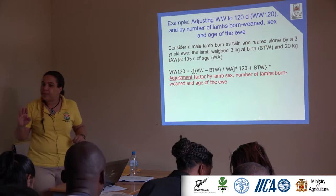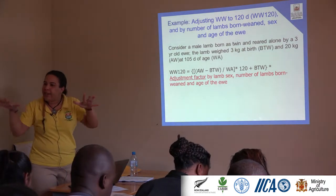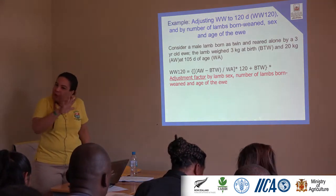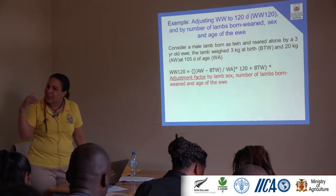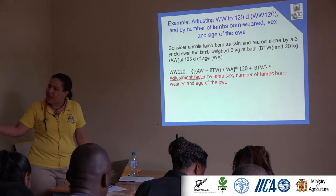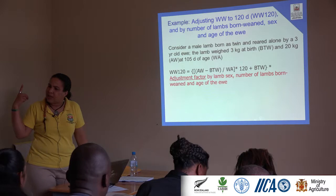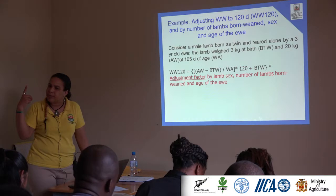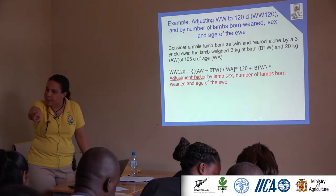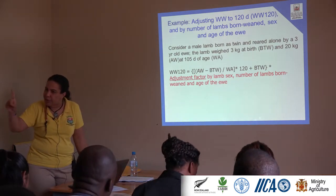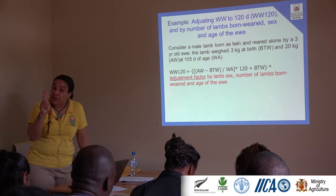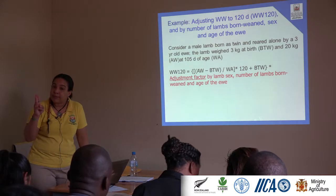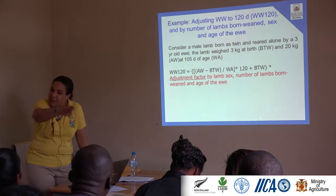Even though we have all the animals adjusted equally to 90 days, researchers found there were other things that could affect the weight of the animals. We need to account for the litter type — the number of kids they had — from birth to weaning. The age of the dam also affects the weight of the kids or lambs. And the third factor is the sex of the animal.